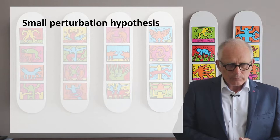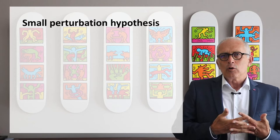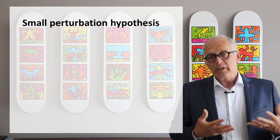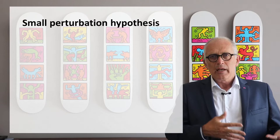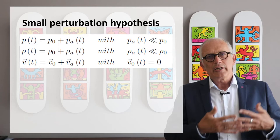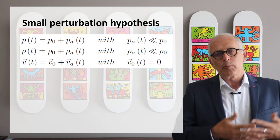The second hypothesis that we make is that all the fields that we consider—pressure, density and velocity—are made of two terms, are the sum of two terms. The first term is constant in space and in time. For instance, the pressure is equal to the atmospheric pressure plus a fluctuating term. We will consider that the atmospheric pressure is large, constant in both space and time. Same for density. The density will be the sum of a constant value plus a small fluctuating term.